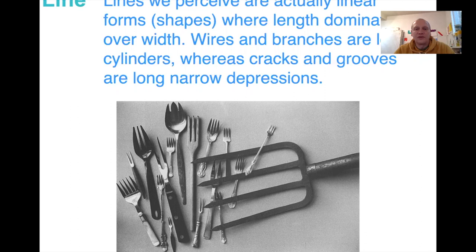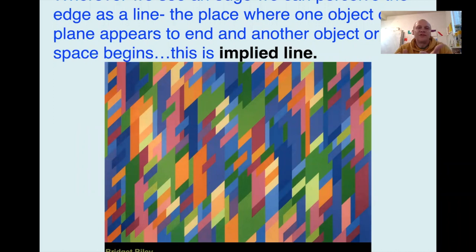Where we see the edge of two shapes together, what we're seeing is actually an implied line. So in a work like this, there are no black outlines around all the shapes — we're seeing two shapes abutting each other and making this implied line.